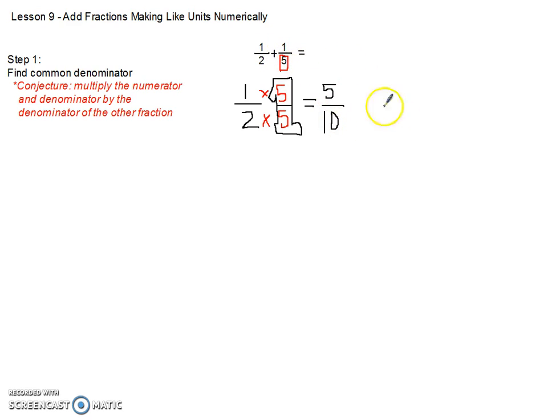Then if we took our other fraction, 1 fifth, and we followed the same conjecture, we're multiplying both the numerator and the denominator by the denominator of the other fraction, which is 2. So we do 1 times 2 and 5 times 2. And then again, I like to draw that 1 so I can visually see that I'm actually multiplying by 1, which is how you keep your fractions equivalent. So the equivalent fraction in this case would be 1 times 2, which is 2, and then 5 times 2, which is 10.